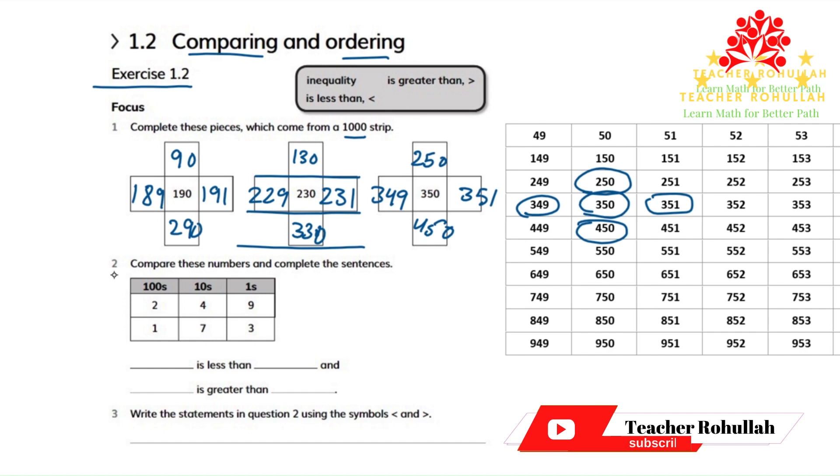In the second question it says compare these numbers and complete the sentences. We have two numbers over here. The first number is 249 and the second one is 173.